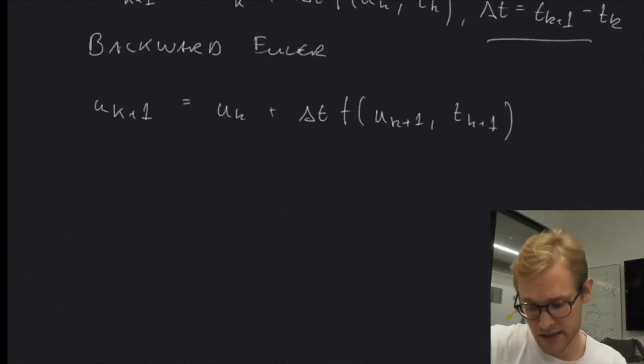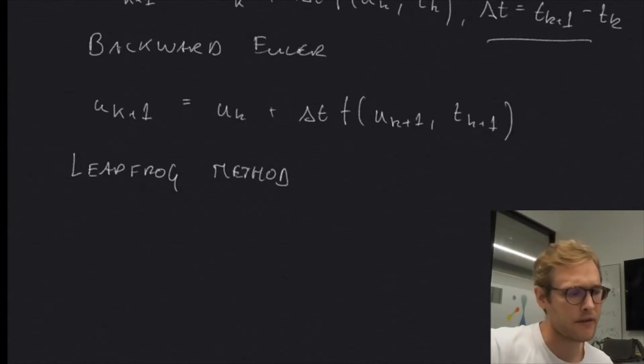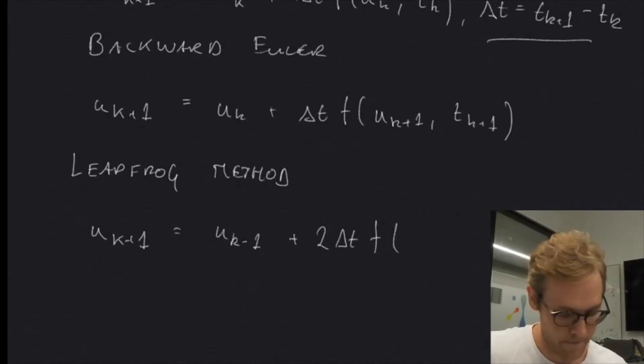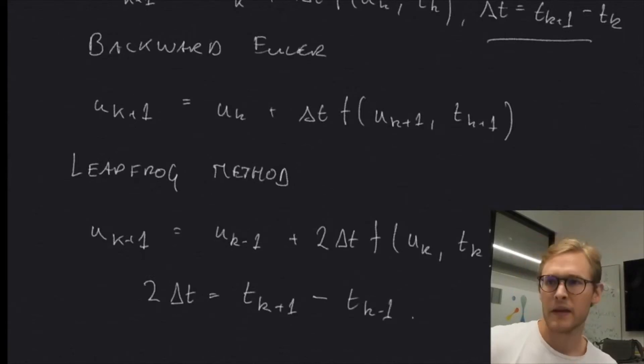Another slightly more advanced method is the leapfrog method, which you might have heard of. Some people call it the midpoint method. And here we also compute the next step in the solution, UK plus 1, as not the current one, but the one before that, the last step. And we add to that 2 times the time step multiplied by the input function, the current time, like so. And this 2 times the time step is equal to TK plus 1 minus TK minus 1. So there you sort of see why it's called the midpoint method, because we will look at the next point and the previous one, and we're sort of in the middle. So yeah, that's why we call it that.